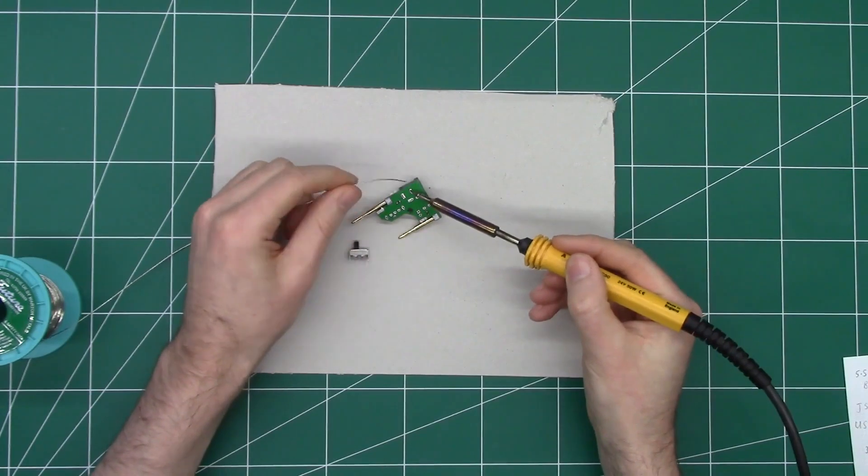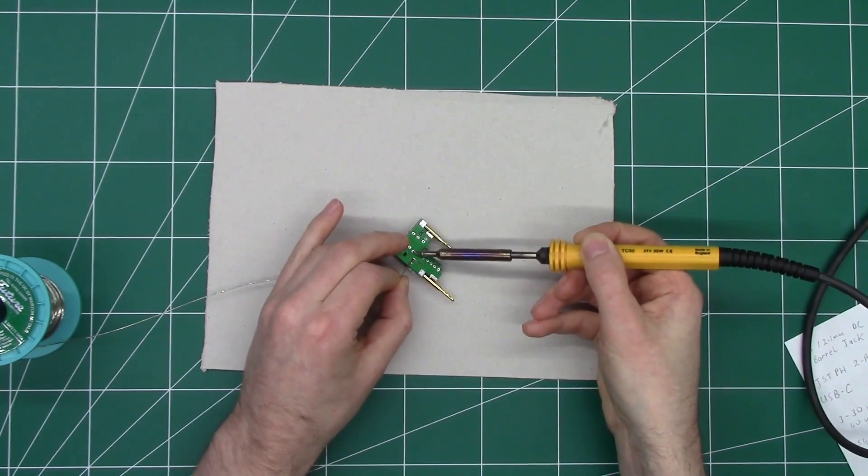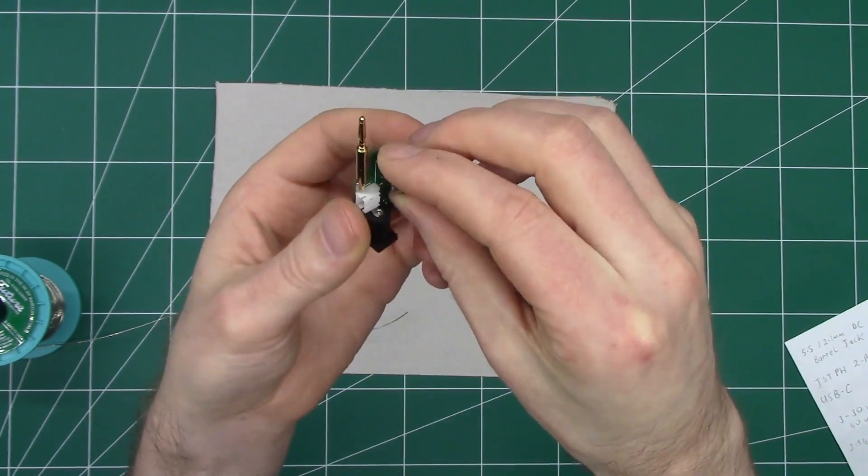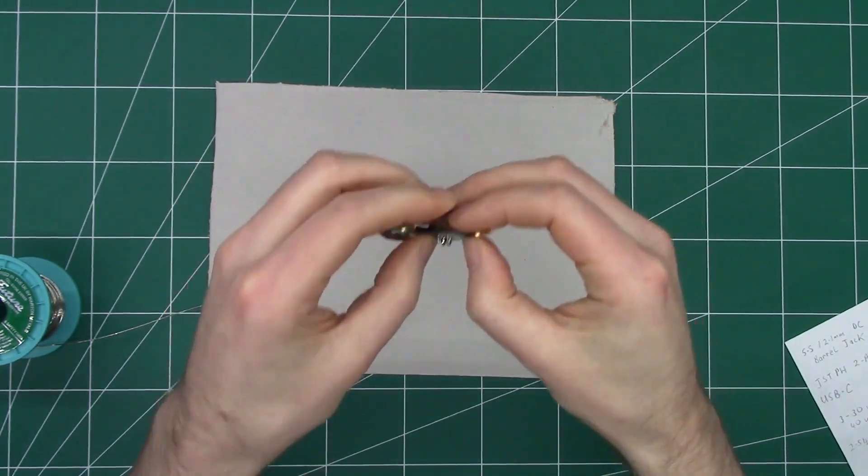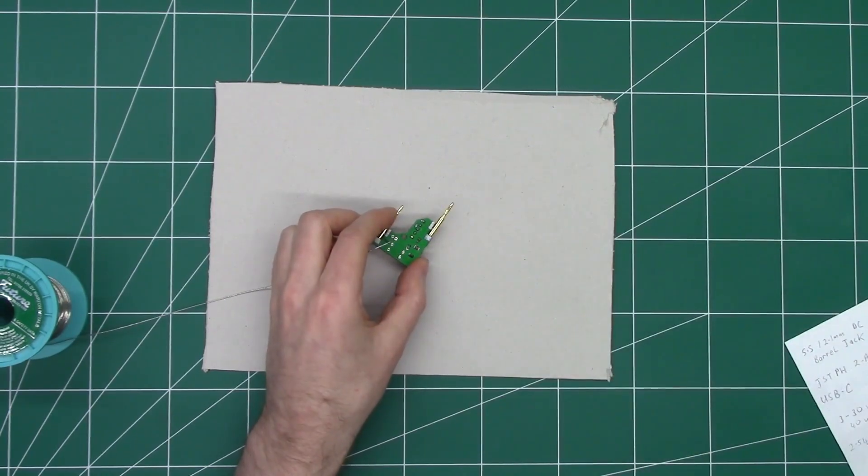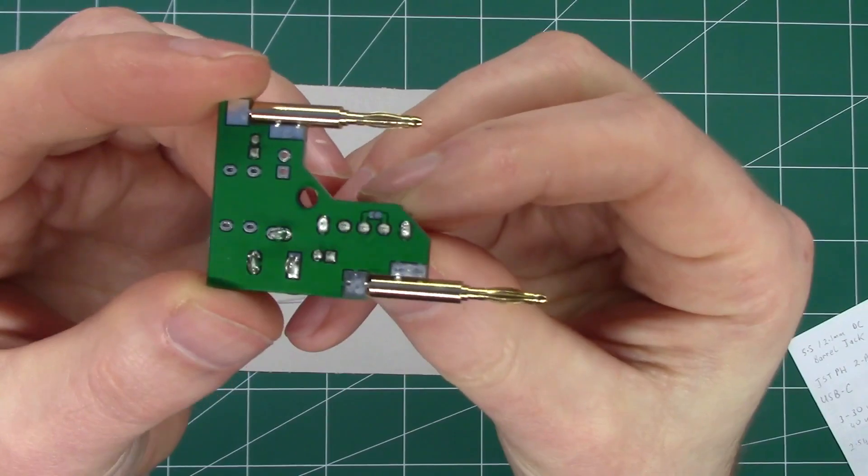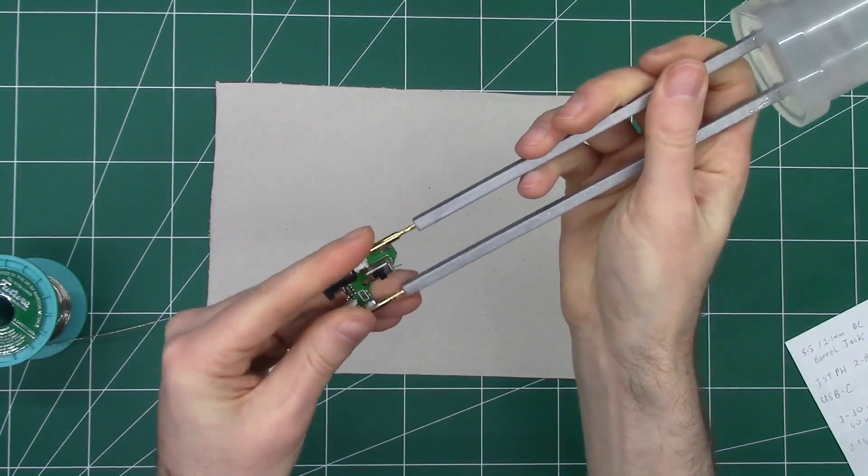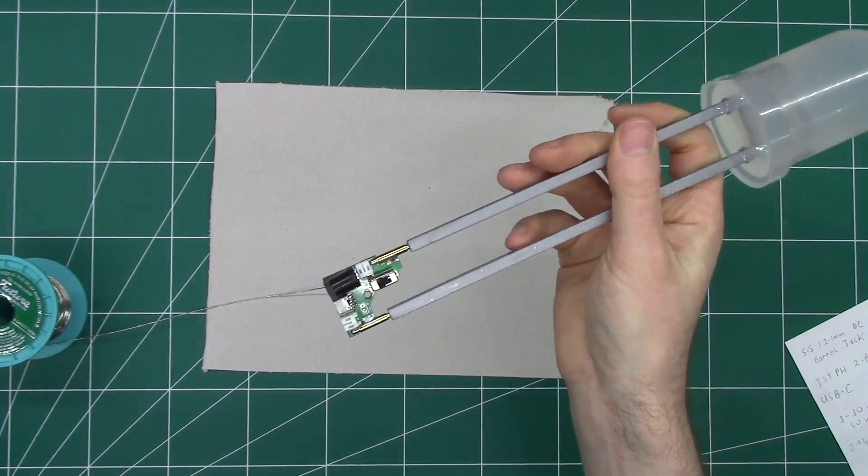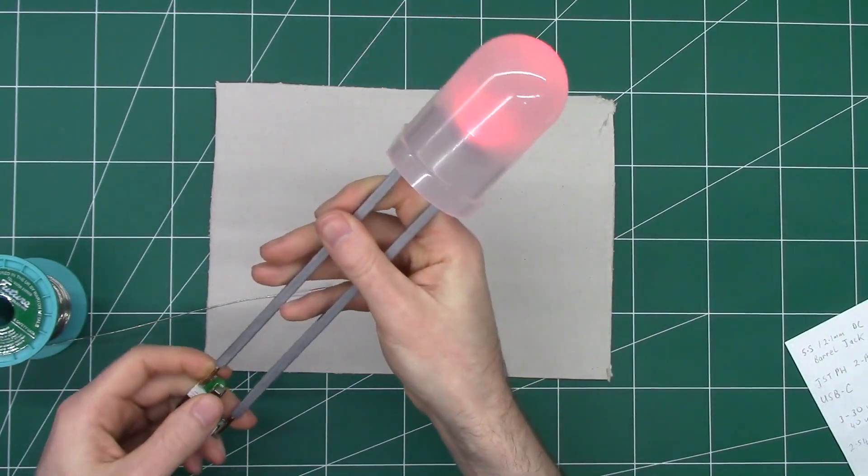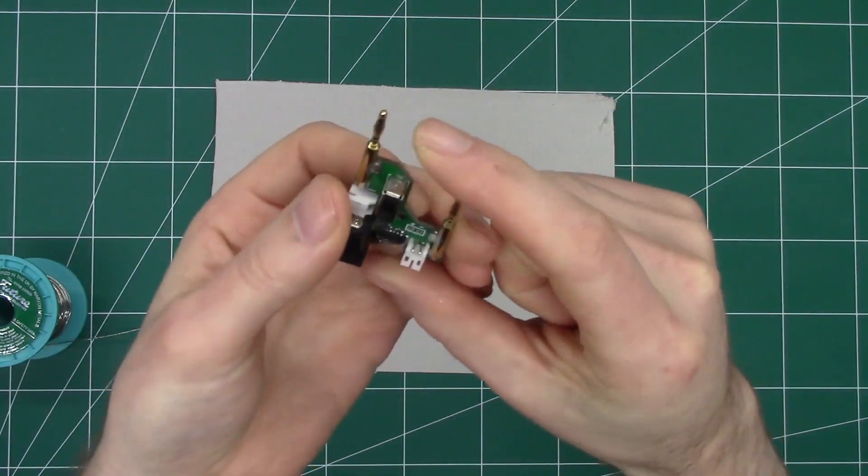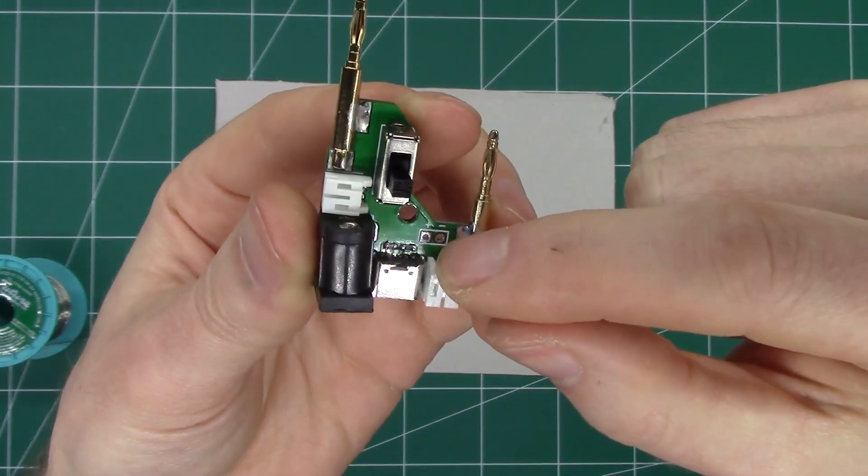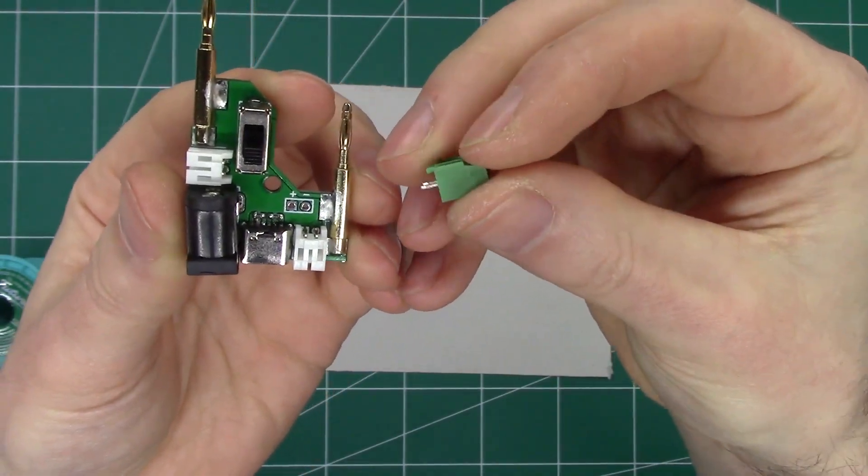Then the last component to solder in is the switch. So I can test that now with the DC power jack. There are two other optional features on the printed circuit board here.